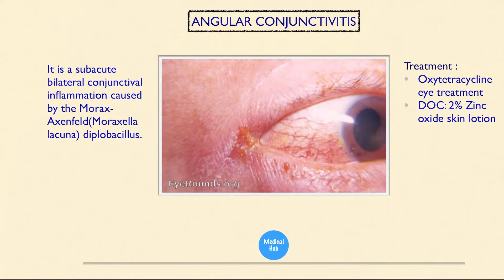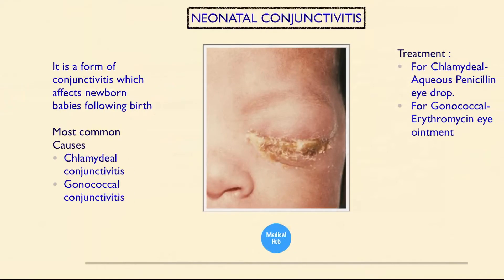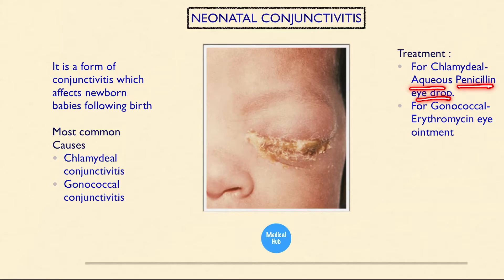Next is angular conjunctivitis — a subacute bilateral conjunctival inflammation caused by Morax-Axenfeld (Moraxella lacunata) diplobacillus. Treatment is oxytetracycline eye ointment; drug of choice is 2% zinc oxide skin lotion. This is neonatal conjunctivitis, a form of conjunctivitis affecting newborn babies following birth.